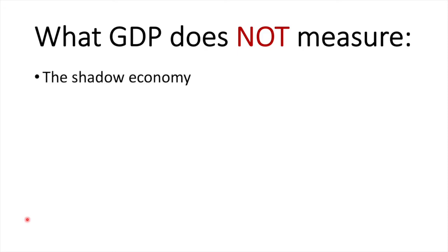GDP does not measure the shadow economy, which includes economic activity that is not recorded by the government. This could include cash-in-hand work, illegal economic activity such as drug dealing or organised crime, or undeclared business profits. Depending on the country, the shadow economy can be a quite large component of economic activity. Since it's not easy to track, it's hard to measure, and then obviously hard to tax.